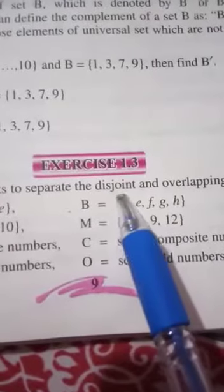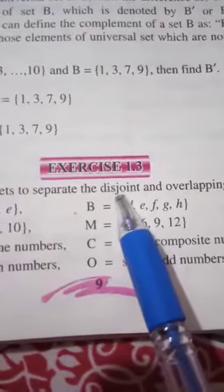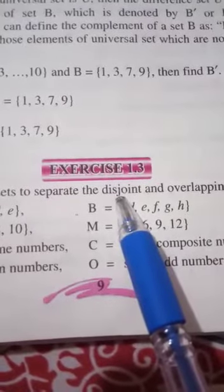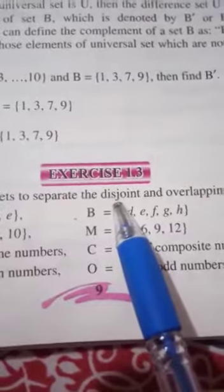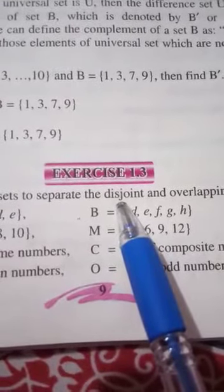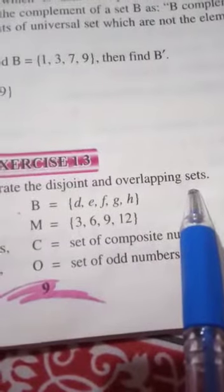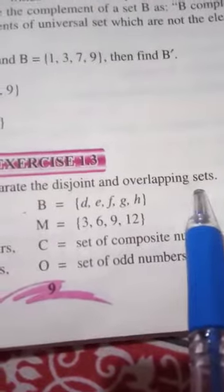I have told you in the last definition, disjoint sets. What is the set that doesn't have any element common? The intersection is phi or empty. It doesn't have any common element. The overlapping set was the set that has one or more common elements.